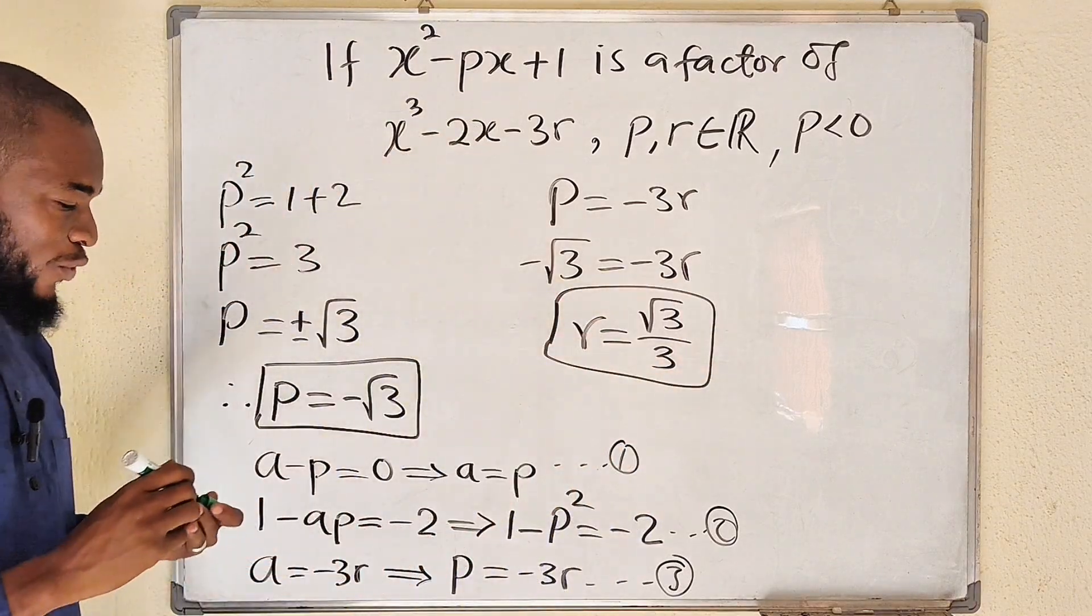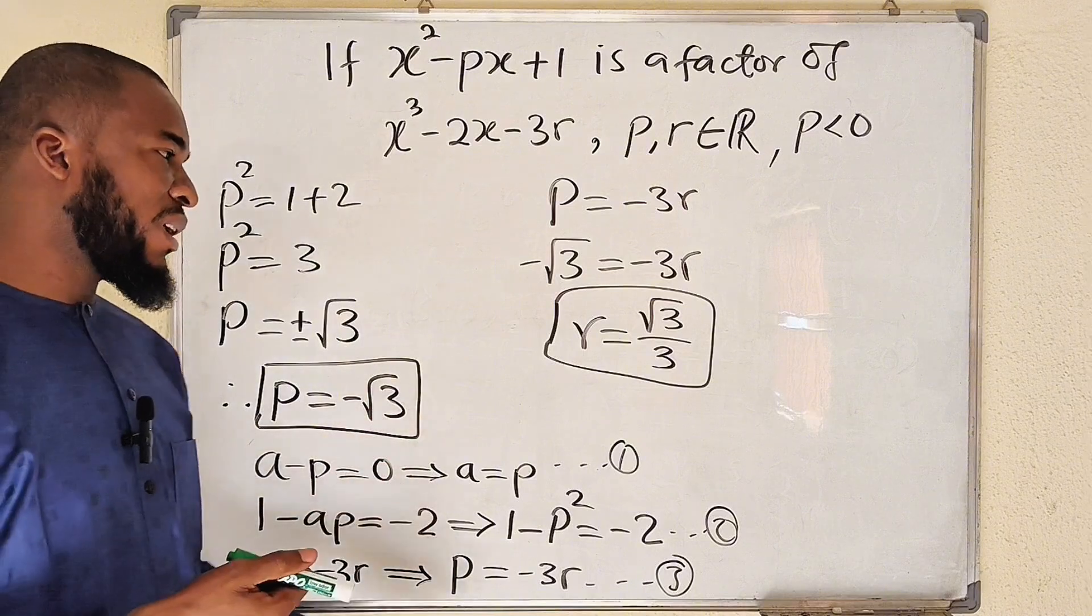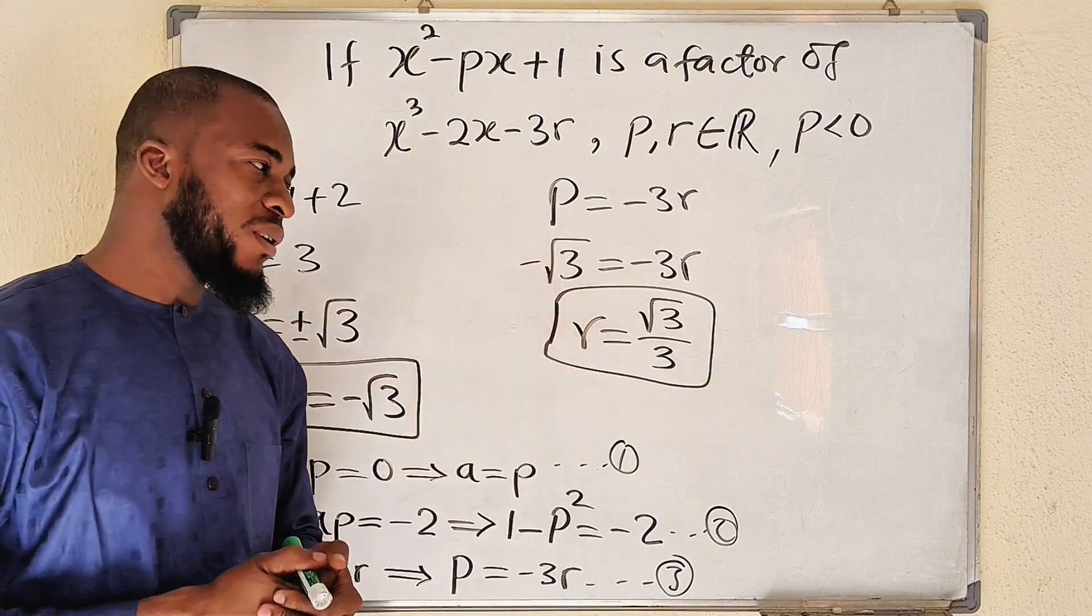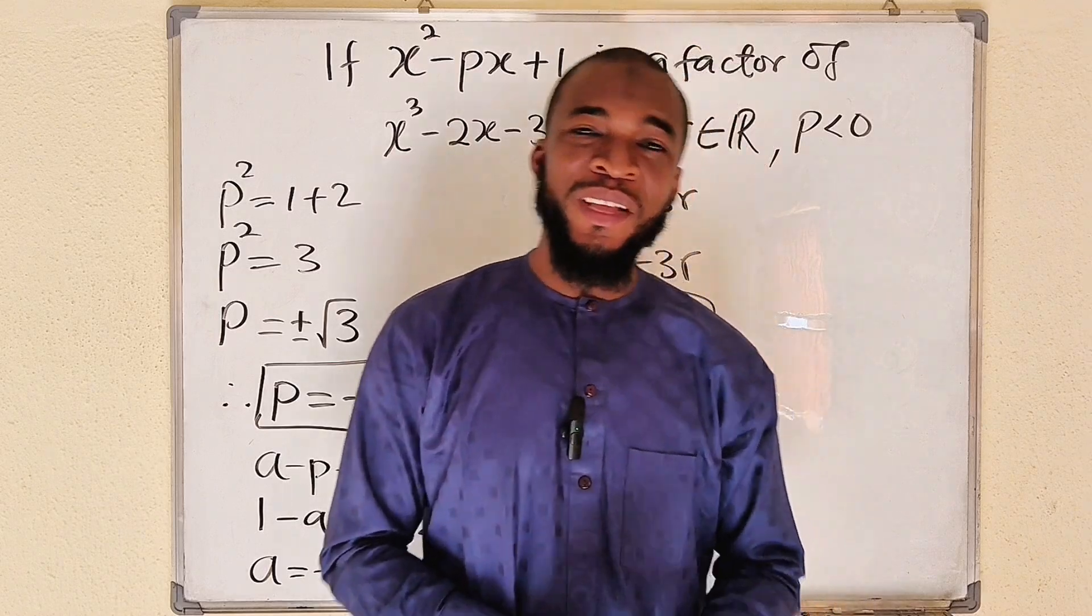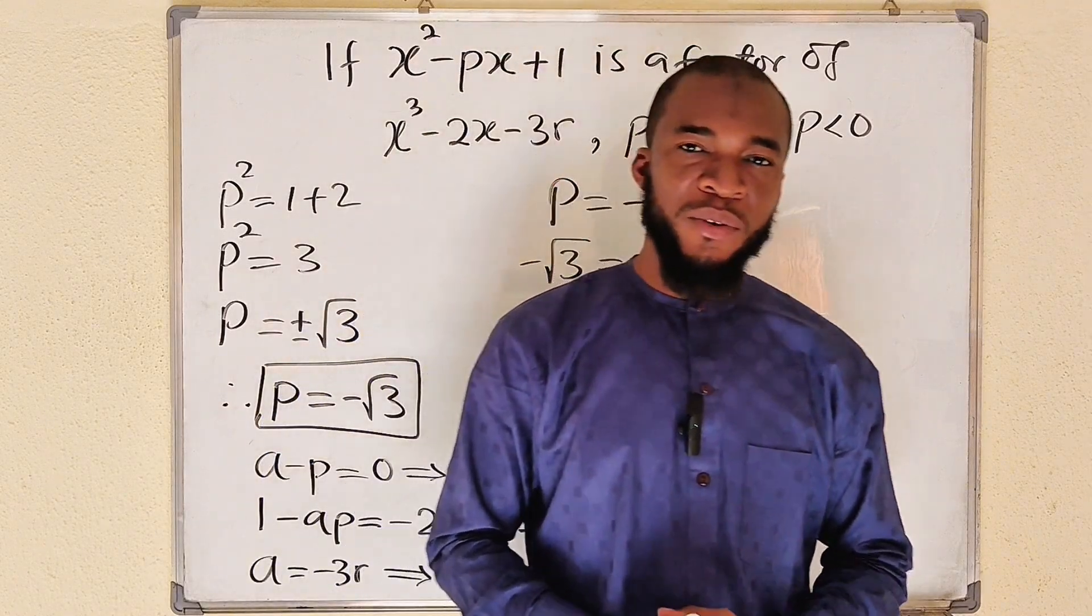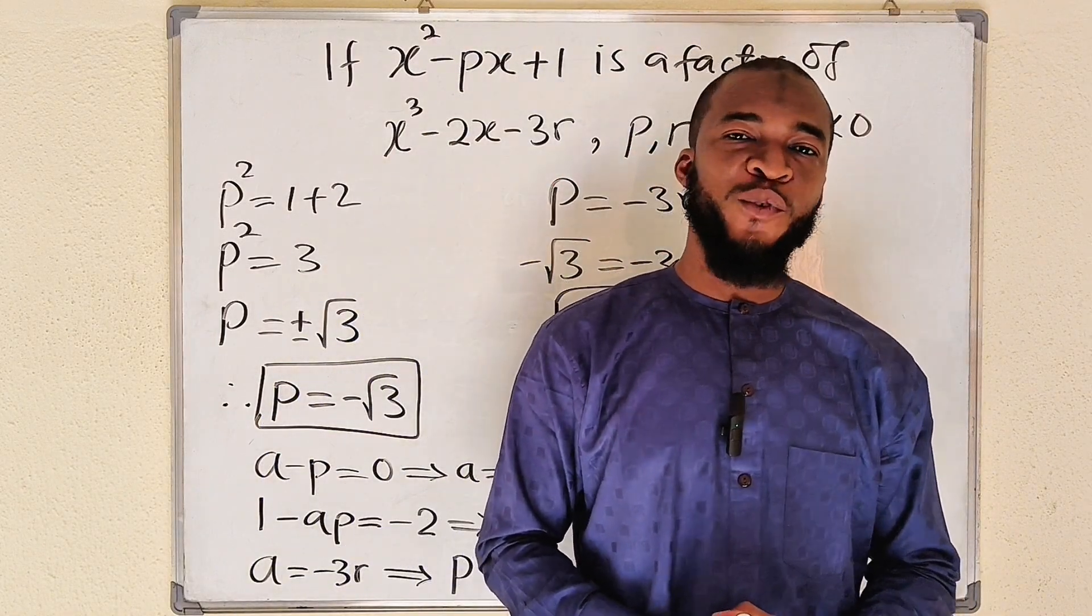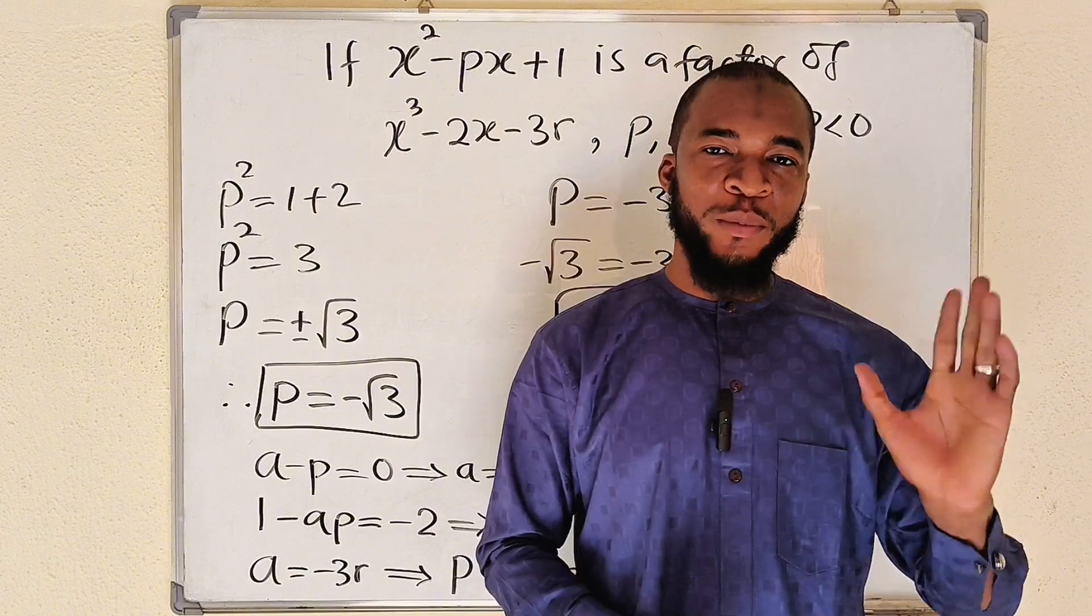So we are able to obtain p and r. So p is negative root of 3, while r is root of 3 divided by 3. Simple as that. Thank you for watching. Do share to your learning colleagues, and don't forget to subscribe to my YouTube channel for more exciting videos.